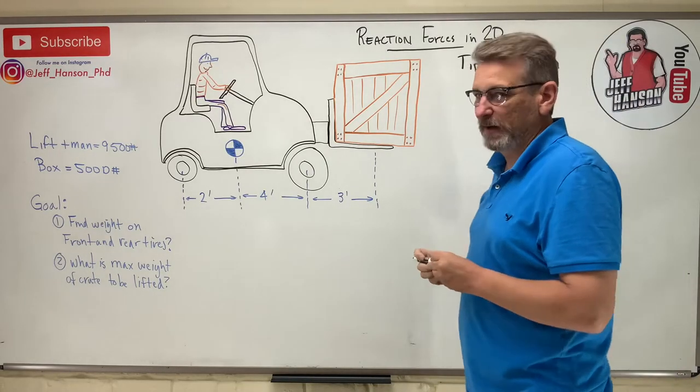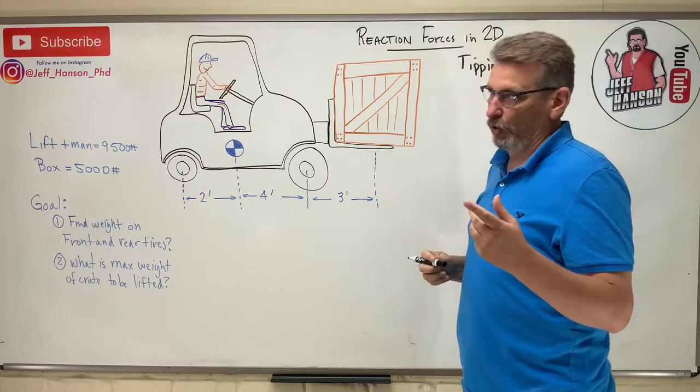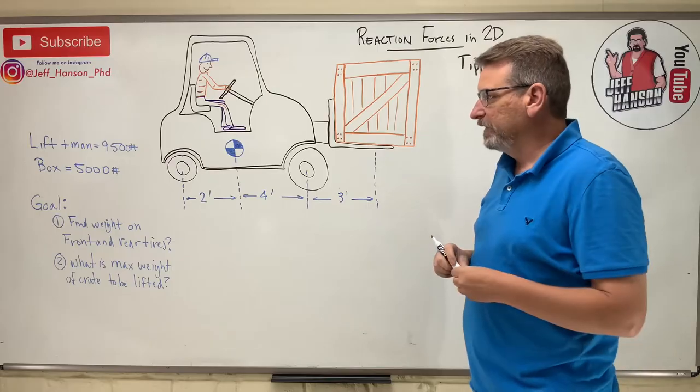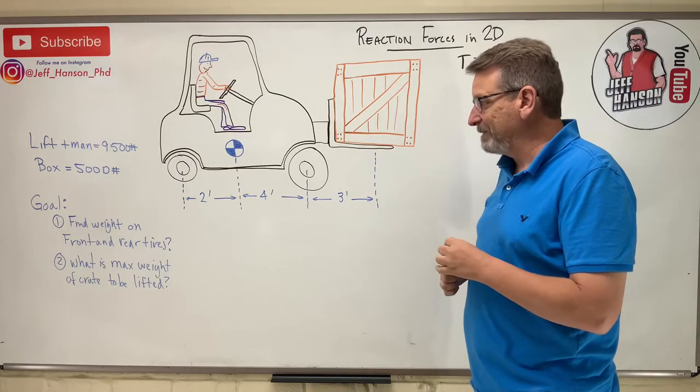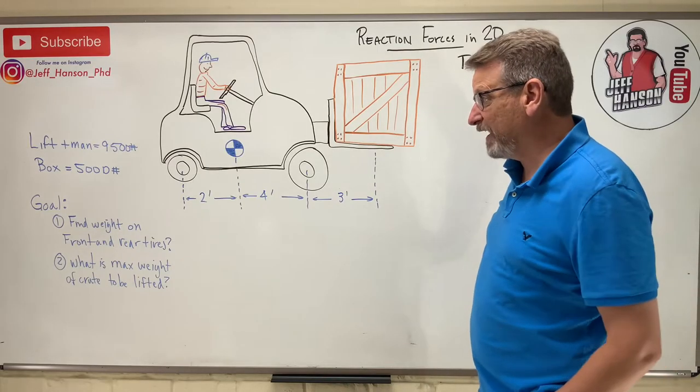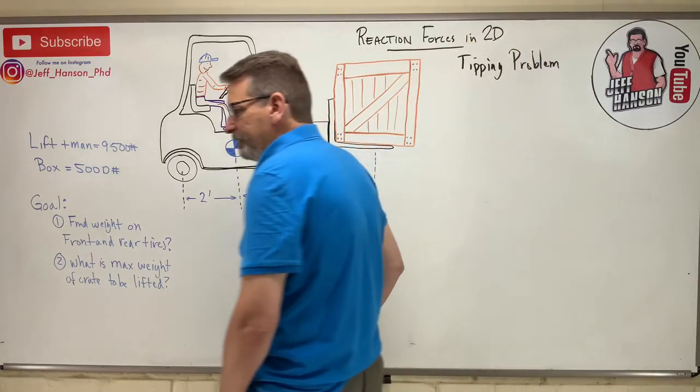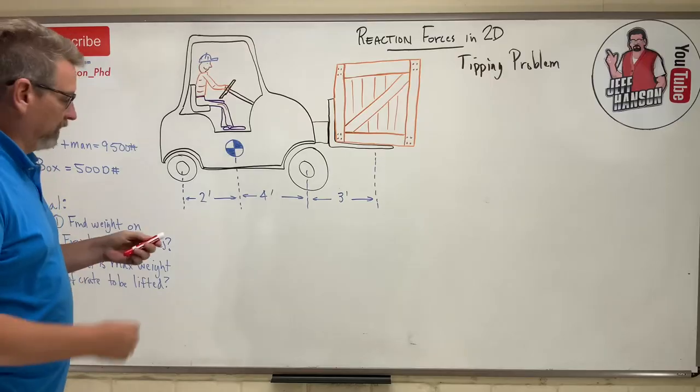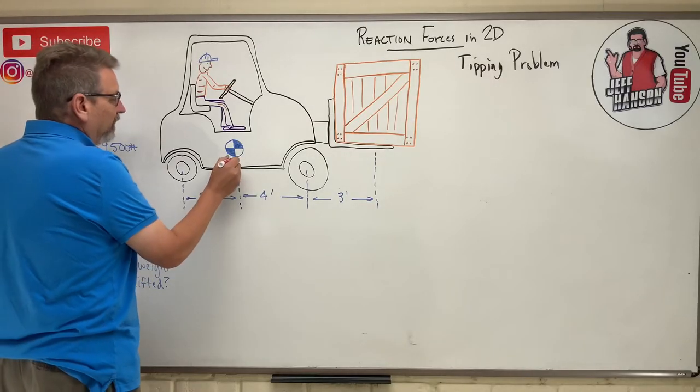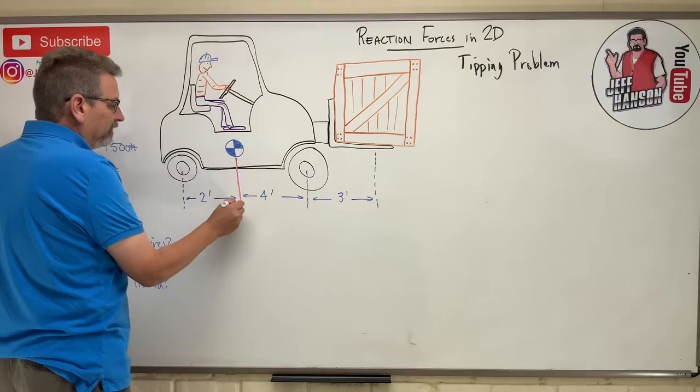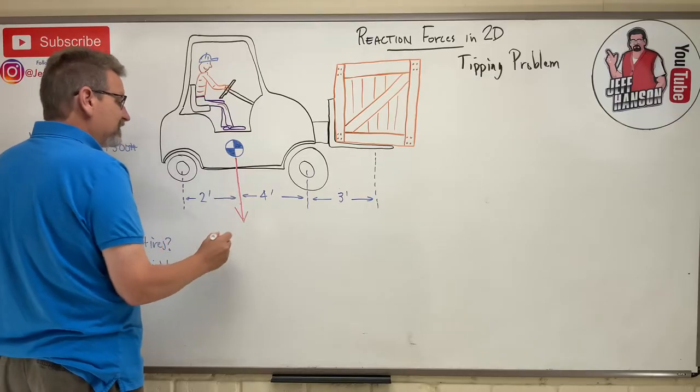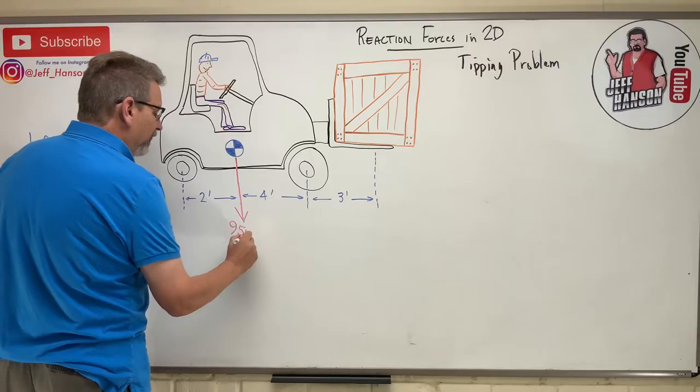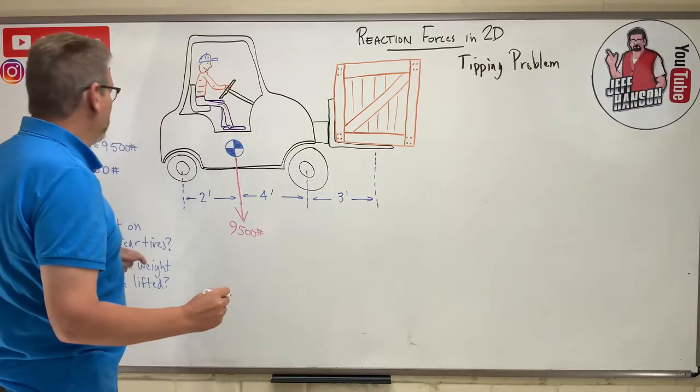Or as they say in Hispania, a tipping problem. Okay, so what you have here is a forklift, all right? And they tell me that the lift plus the man weighs 9,500 pounds. Okay, so 9,500 pounds. Where's my red pen? Here it is. Okay, that is going to be applied here at this kind of bullseye. That bullseye is just like the center of gravity.